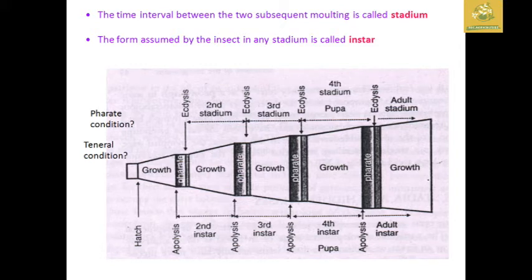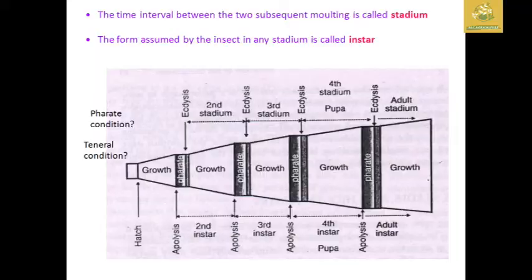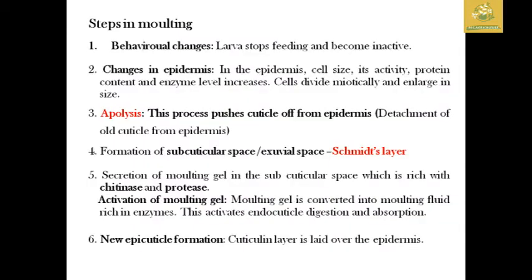Let's look at a picture reference showing insect hatch and growth. There is an ecdysis process from egg to adult stage. In the molting process, if there are 10 changes, the first are behavioral changes.